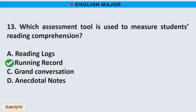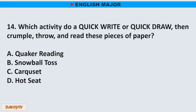Question number 14. Which activity involves a quick write or quick draw, then crumple and throw the pieces of paper, then read them? A. Quaker reading. B. Snowball toss. C. Car-Cuzette. D. Hot seat. The correct answer is letter B. Snowball toss.